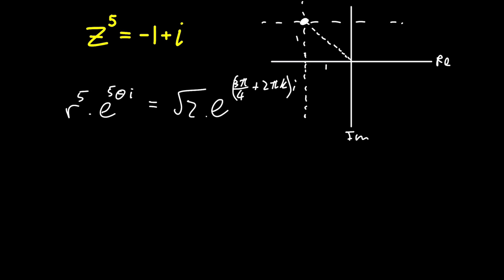So now we've written both sides in an exponential form, the modulus argument exponential form. Now we can equate the parts of these. We can equate the moduli, and then we can equate the arguments.